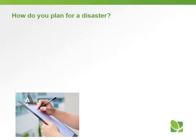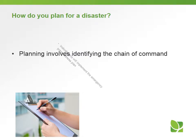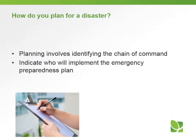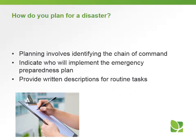How do you plan for a disaster? Disasters and emergencies can happen anytime and anywhere, so planning is key. Planning involves identifying the chain of command at your facility — who is in charge of what. Indicate who will implement the emergency preparedness plan, who is going to take charge, and then provide written descriptions for routine tasks — who is going to be doing all the different tasks that need to be done during a disaster.